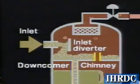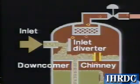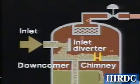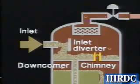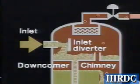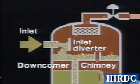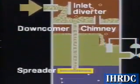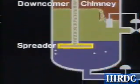A chimney is needed to equalize the gas pressure between the lower liquid collection section and the upper gravity settling section. The spreader or downcomer outlet is located beneath the oil-water interface.